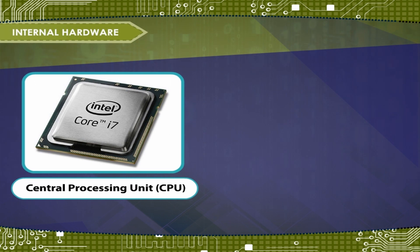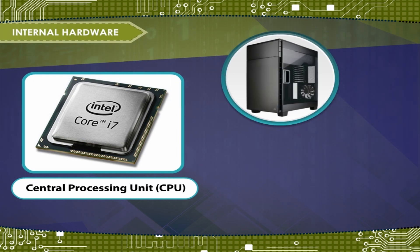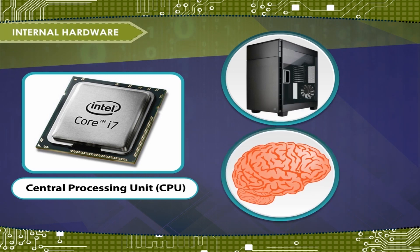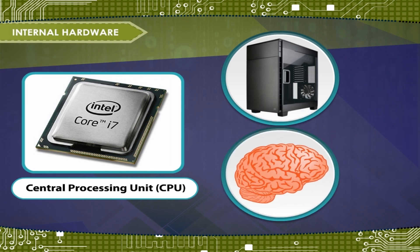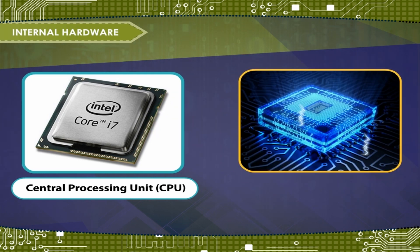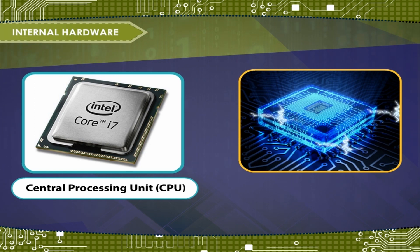Central Processing Unit — CPU. The main processing device is the CPU. Full form of CPU is Central Processing Unit. It is called the brain of the computer. It processes the inputs given to the computer. It has three main components.